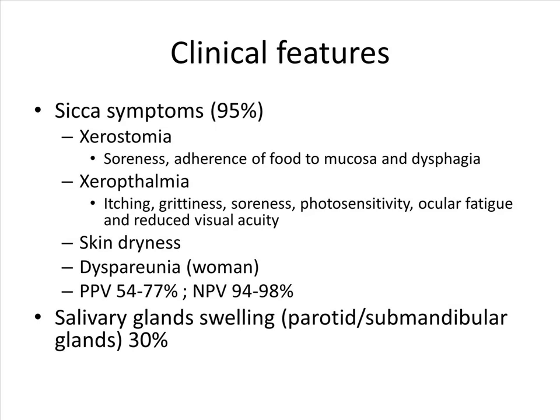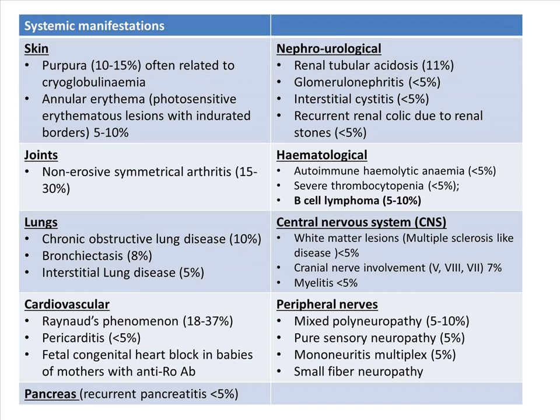Sjogren's syndrome does not only cause inflammation of the exocrine glands; it also causes multisystemic involvement whereby the skin, joints, lungs, cardiovascular, hematological, and nervous systems can all be affected. Crucially, individual patients with Sjogren's syndrome have a risk of developing B cell lymphoma in about 5% to 10% of individuals.